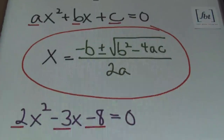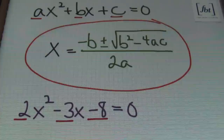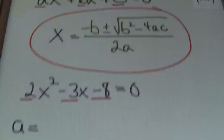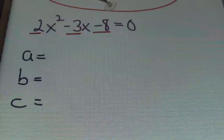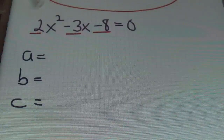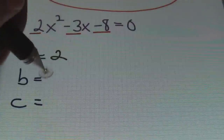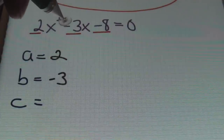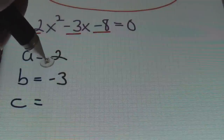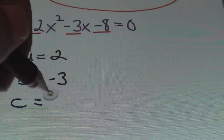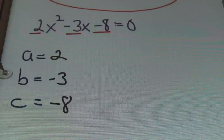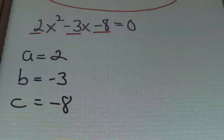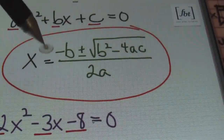Notice that I have the a underlined, the b underlined, the c underlined. Those are the coefficients in the equation — the numbers in front of the variables. For instance, if I have an example of 2x squared minus 3x minus 8 equals to zero, then my a value would be 2, my b value would be negative 3, and my c value would be negative 8.